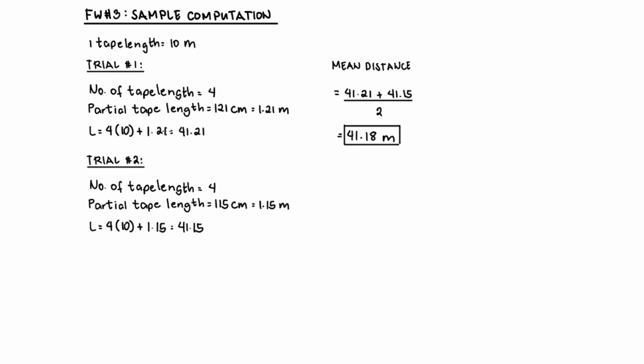And then add to it your partial tape length, which is 1.21 meters. Solving for that, you'll get 41.21 meters. And then do the same thing for trial 2. You'll get 41.15 meters. And then the mean distance is just the average of those two data. And then you'll get 41.18.